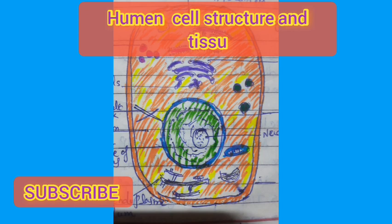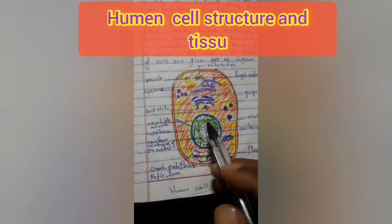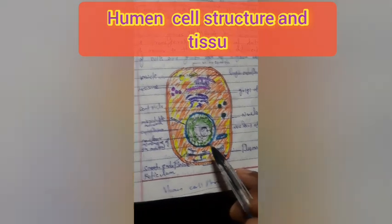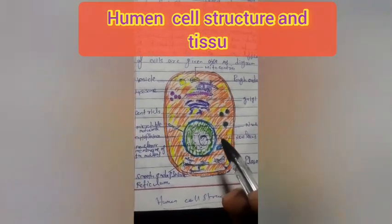The different parts of the cell are given below in the diagram. Now we see the human cell structure and its numbered parts.